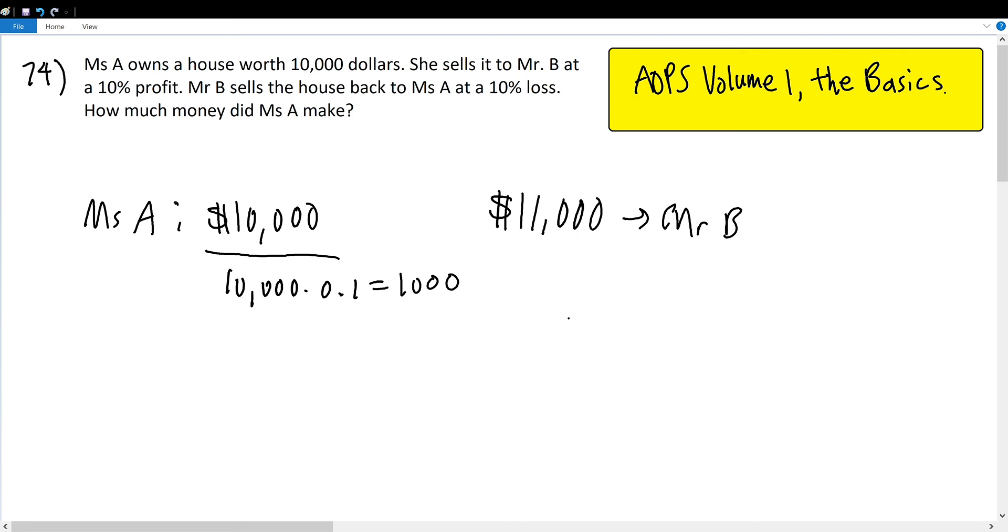It tells us that he sells the house back to Miss A at a 10% loss. How much is 10% of $11,000?